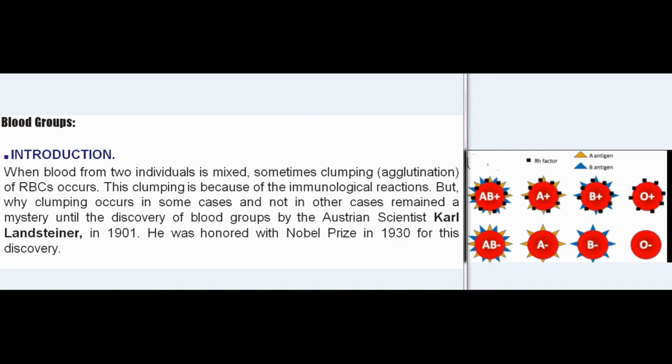Chapter 21: Blood Groups. Introduction: When blood from two individuals is mixed, sometimes clumping (agglutination) of RBCs occurs. This clumping is due to immunological reactions, but why clumping occurs in some cases and not others remained a mystery until the discovery of blood groups by Austrian scientist Karl Landsteiner in 1901. He was honored with the Nobel Prize in 1930 for this discovery.